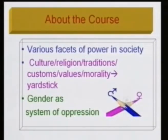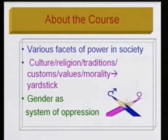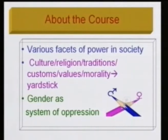Let me also take up with you what this course is about and what we are going to discuss. The course talks about various facets of power in our society, as to how power displays or manifests in our society. The course also covers the yardsticks which are culture, religion, tradition, customs, values, morality, and how gender is embedded and seen through these yardsticks and how power is manifested through these socio-cultural yardsticks.